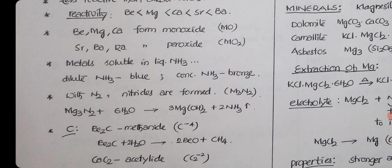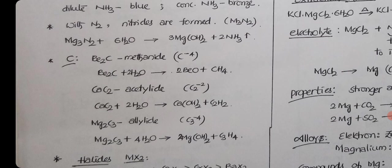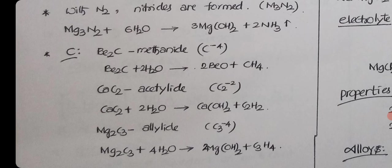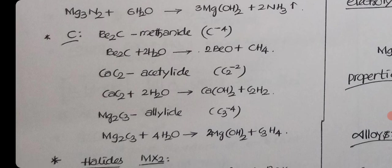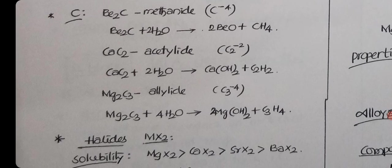With nitrogen, nitrides are formed like Mg3N2, magnesium nitride. These nitrides on hydrolysis produce ammonia gas. Mg3N2 will give you ammonia. With carbon, they form different carbides. Beryllium carbide is called methanide because it produces methane on hydrolysis. Calcium carbide is acetylide because it gives acetylene. Magnesium carbide is called allylenide because it produces allylene, C3H4.